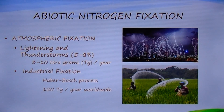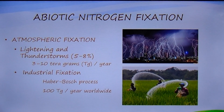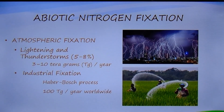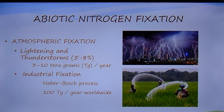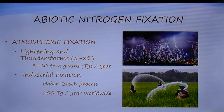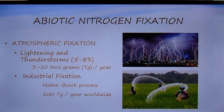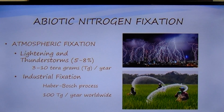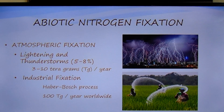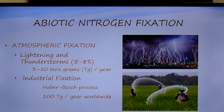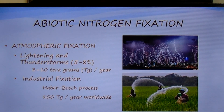Two German scientists, Fritz Haber and Carl Bosch, developed an artificial way to convert non-reactive atmospheric nitrogen to ammonia. Ammonia is the reactive compound that forms the base of nitrogen fertilizers. Currently, the Haber-Bosch process is used to produce about 170 teragrams of reactive nitrogen per year worldwide, most of which is used to produce nitrogen fertilizers. Food grown with this fertilizer feeds some 2 billion people around the world, and global use of nitrogen fertilizers is increasing by about 15 teragrams per year.